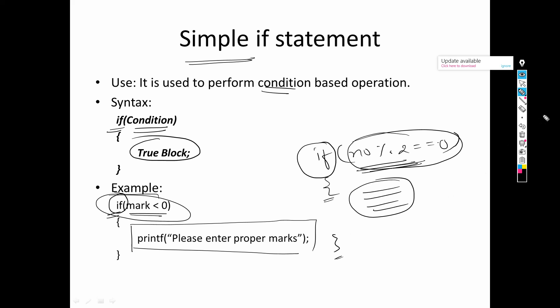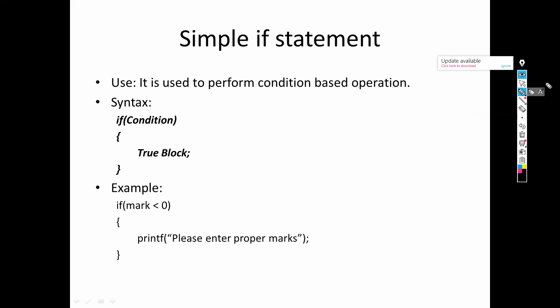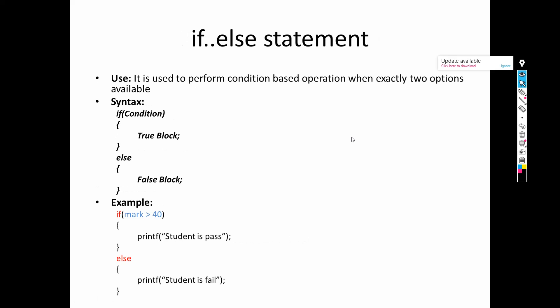Now let's understand the concept of if-else. We go for if-else when we have exactly two possibilities and we need to select one out of them. The structure is: if condition — if the condition is true, the true block will be executed; else the false block will be executed.